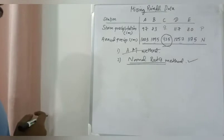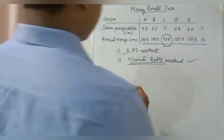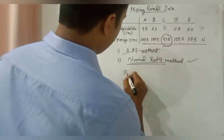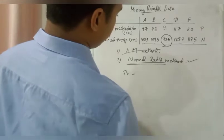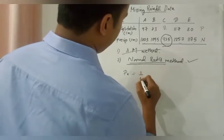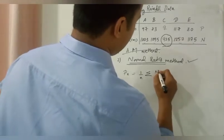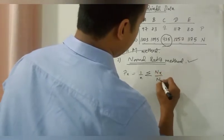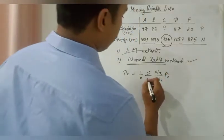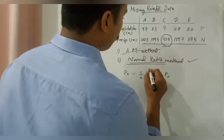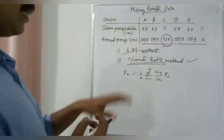So we have decided that we will be using normal ratio method for our calculation. So the normal ratio method calculation equation is: Px is equal to 1 by n sigma, Nx by Ni into Pi, where i is equal to 1 to n. That is the equation.